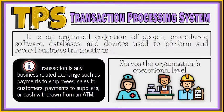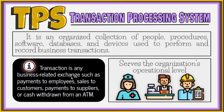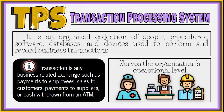TPS is an organized collection of people, procedures, software, databases, and devices used to perform and record business transactions. The term transaction in TPS is defined as any business-related exchange of goods, services, or money, such as payments to employees, sales to customers, payments to suppliers, or cash withdrawn from an ATM. These systems serve the organization's operational level.